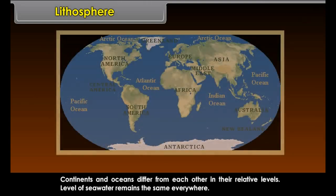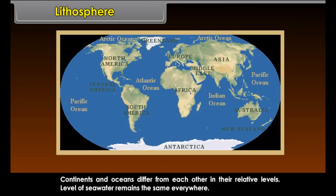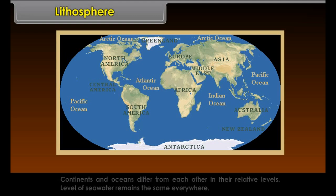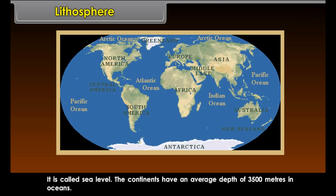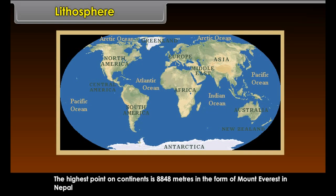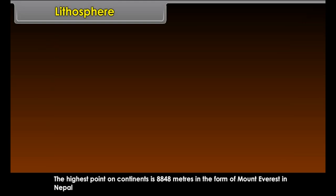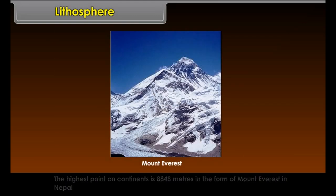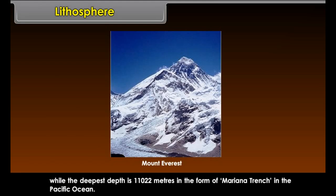Continents and oceans differ from each other in their relative levels. The level of seawater remains the same everywhere — it is called sea level. The continents have an average depth of 3,500 meters in oceans. The highest point on continents is 8,848 meters in the form of Mount Everest in Nepal, while the deepest depth is 11,022 meters in the form of Mariana Trench in the Pacific Ocean.